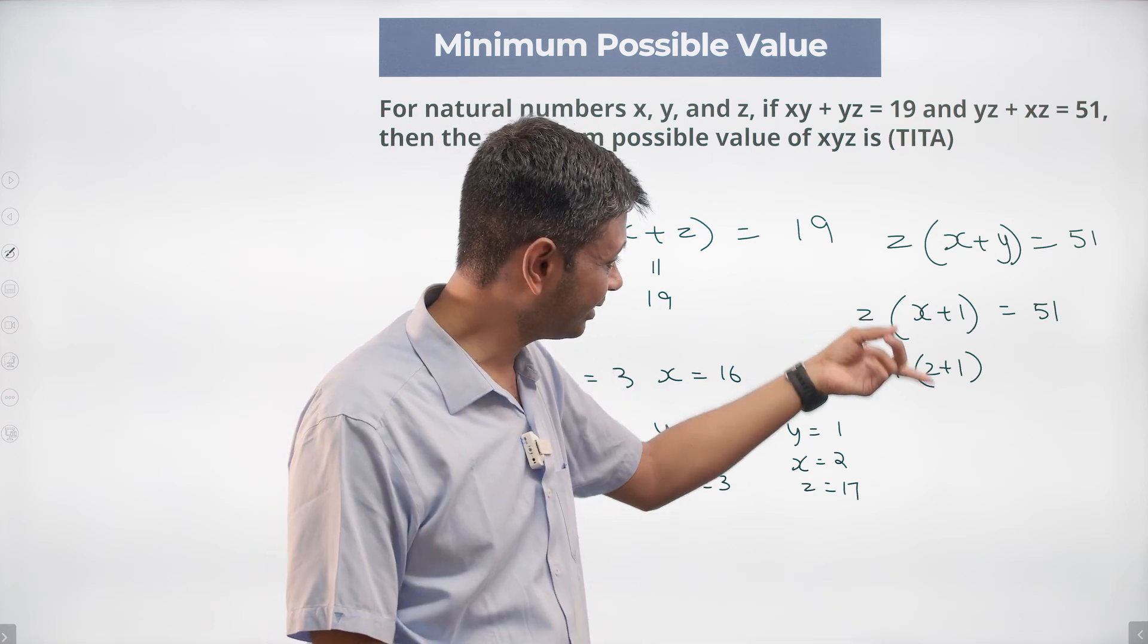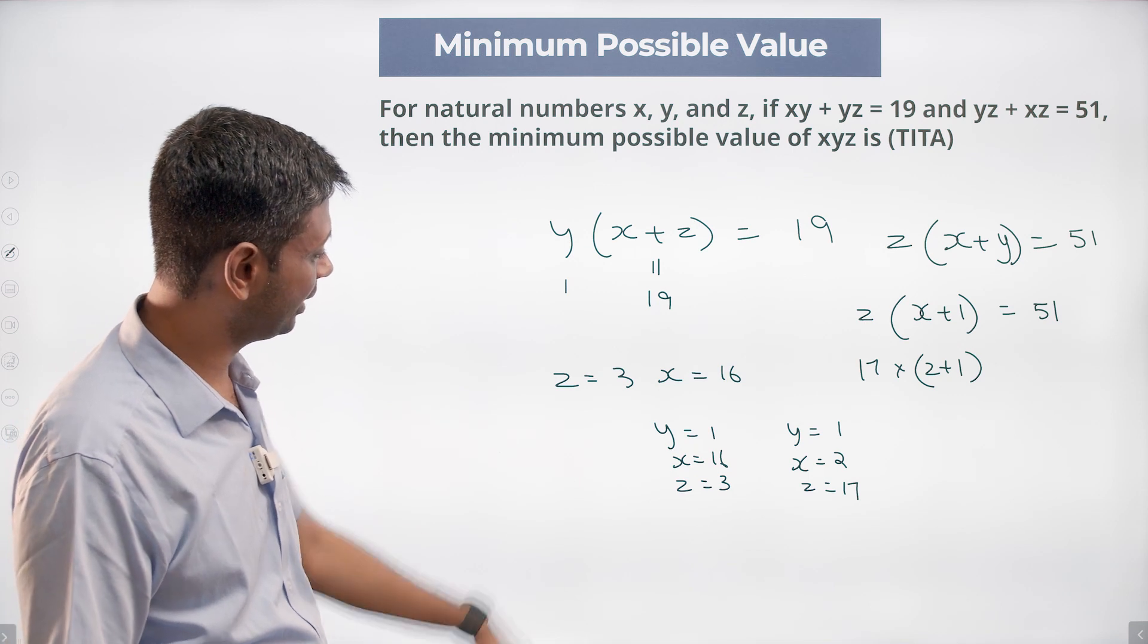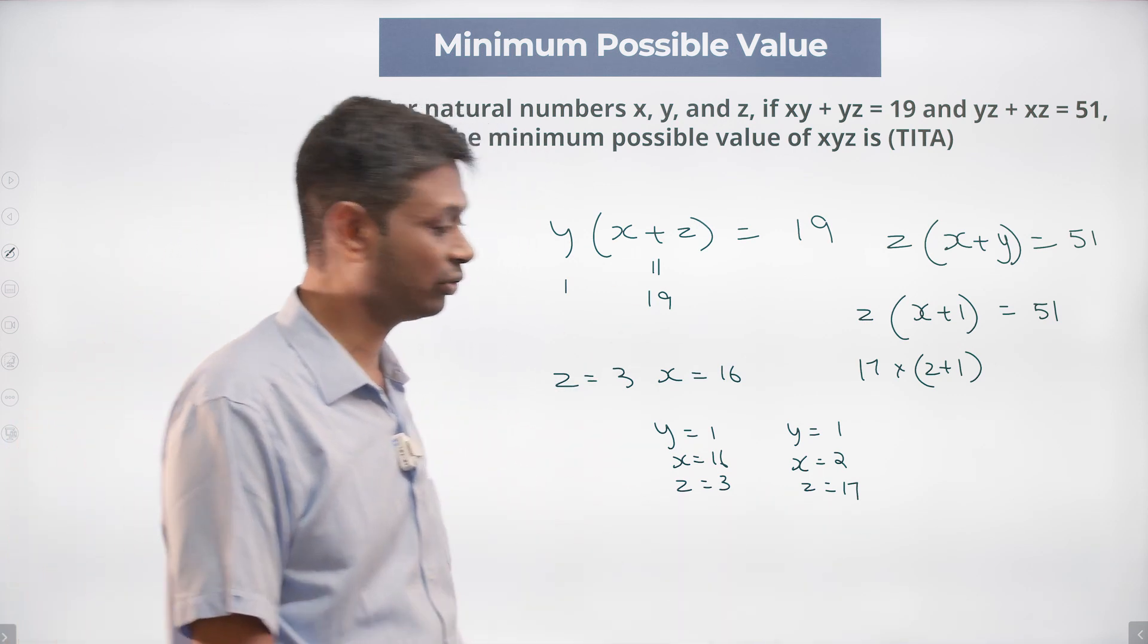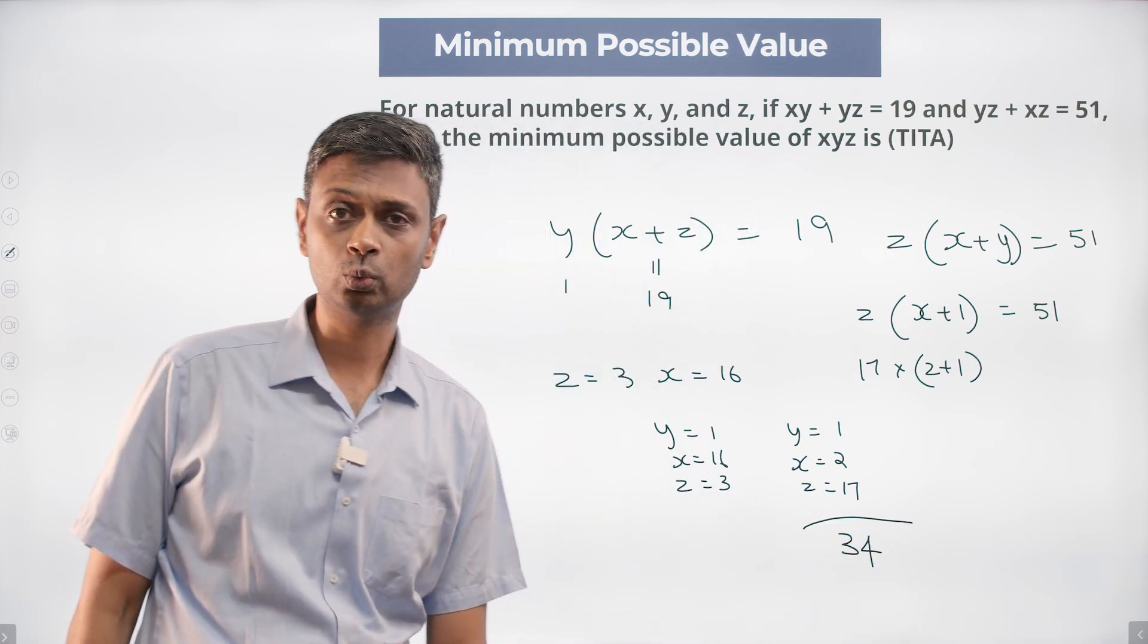Minimum possible value of xyz: multiply this is 48, this is 34. Product is lower in this case which is 34. Lovely.